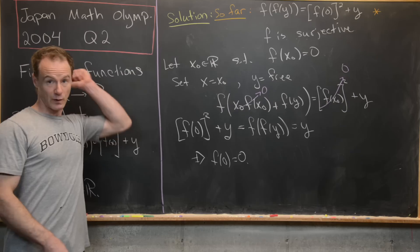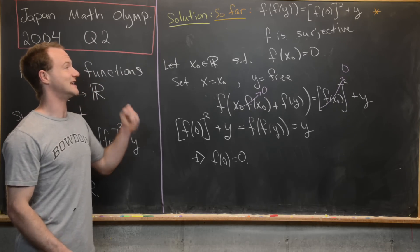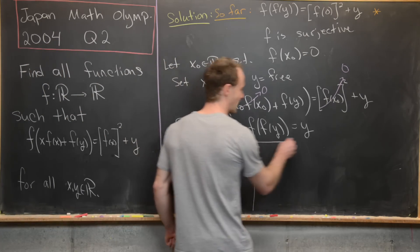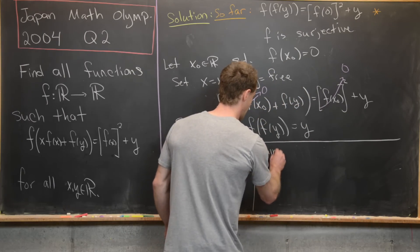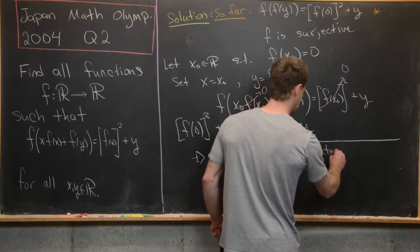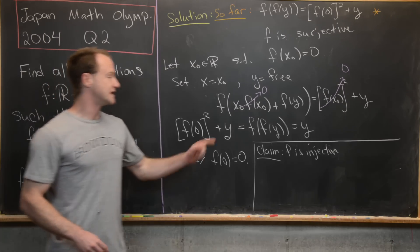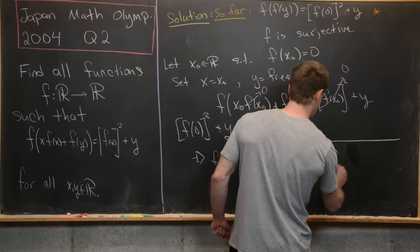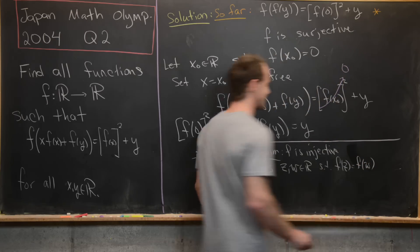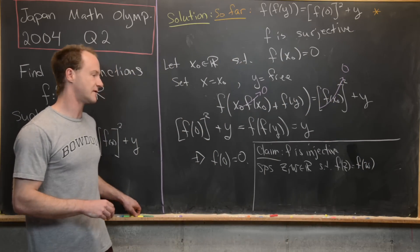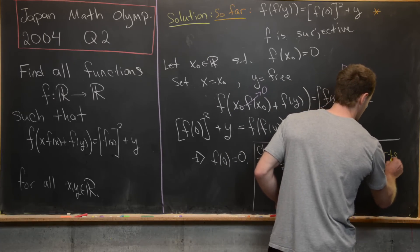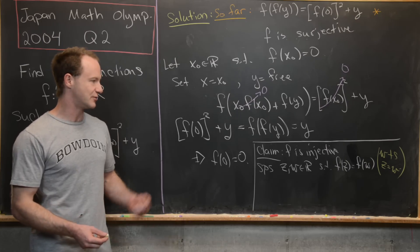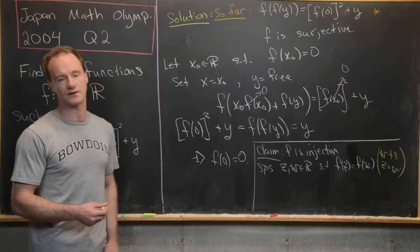Next, we claim f is injective. Suppose z and w are real numbers such that f(z) = f(w); our goal is to show z = w. Applying f to both sides gives f(f(z)) = f(f(w)). Since f(f(y)) = y for all y, this gives z = w, satisfying the definition of injectivity. So f is both surjective and injective — that is, bijective.